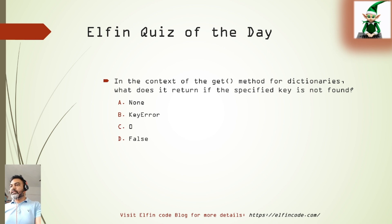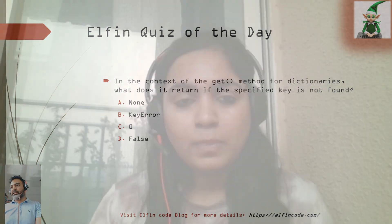Quiz of the day: In the context of the get method for dictionaries, what does it return if the specified key is not found? A) None, B) KeyError, C) Zero, D) False. Please provide your answer in the comment section. That is it for today's video, thank you for watching.